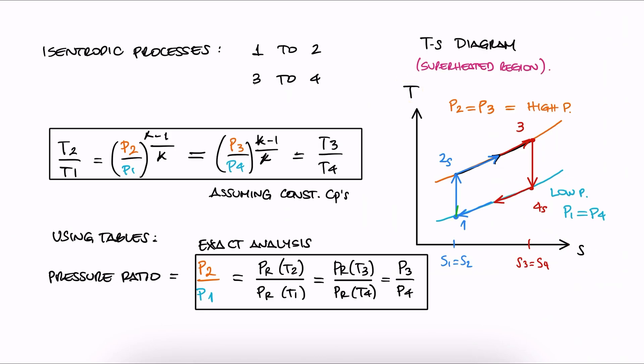The process from 1 to 2 would be a curve to the right of 2s, just like the process from 3 to 4 would be a curve to the right of 4s. Definitely watch the isentropic efficiency lecture if you don't understand this.